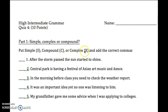And then a complex sentence has an independent clause and a dependent clause. That dependent clause starts with a subordinating conjunction, such as while, as soon as, because, if — one from that list.